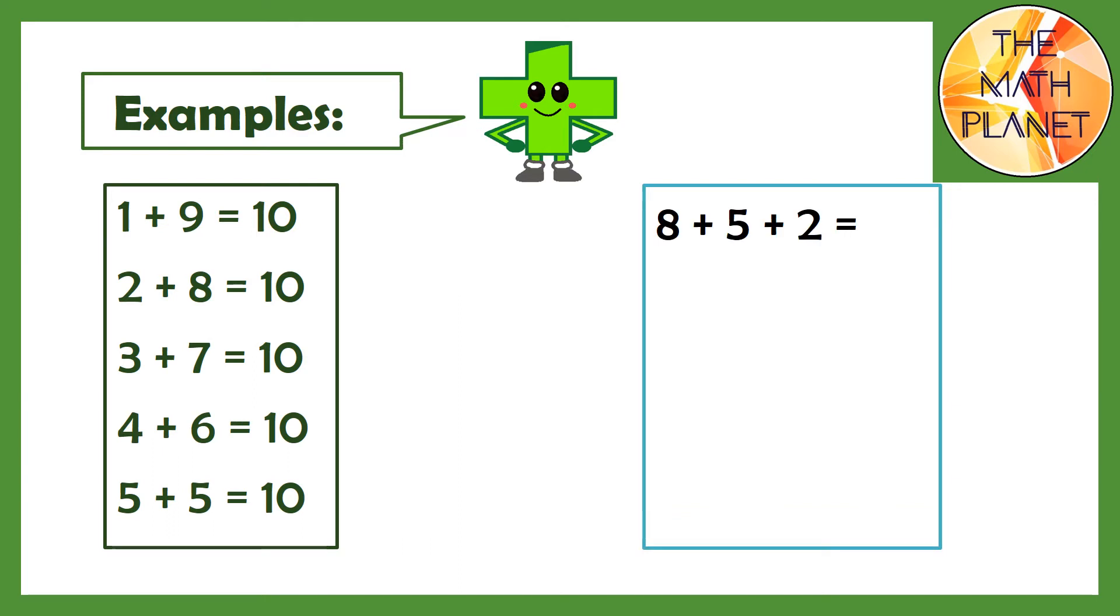If we have 8 plus 5 plus 2, we can pick the numbers that make 10 and add them first. So I will pick 8 and 2 because they make 10. Then I will add 5 more and the sum is 15.